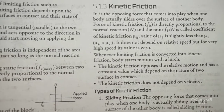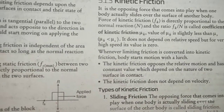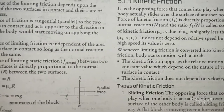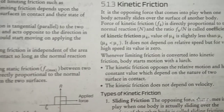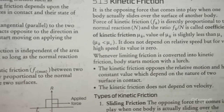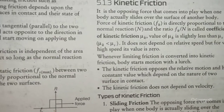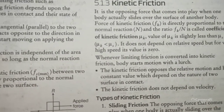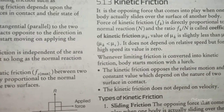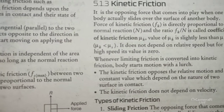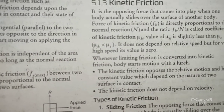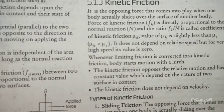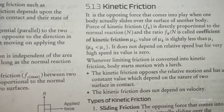Now the same concept in kinetic friction. Until now the body was within the static limit — not overcoming limiting friction. When the body overcomes that force and starts to move, the opposing force from the surface at every point of contact is called kinetic friction. When a body actually slides over the surface of another body, force of kinetic friction fk is directly proportional to normal reaction N. The ratio fk/N is called the coefficient of kinetic friction.